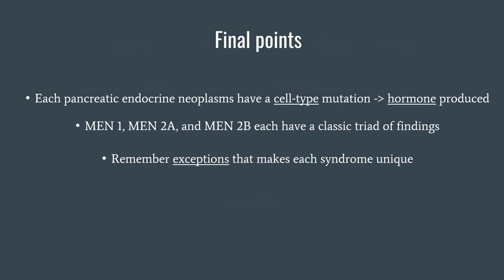We'll finish with some final points. Each pancreatic endocrine neoplasm has a cell type — clue in on those, and based on your understanding of physiology, you'll remember each cell normally produces a hormone. This neoplasm is just an excess production of that normally produced hormone. All three MEN syndromes have a classic triad of findings. For NBME exams, these classic triads represent the vast majority of how these questions are tested.